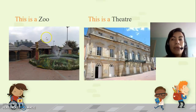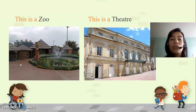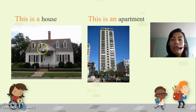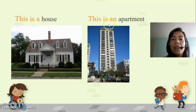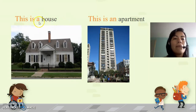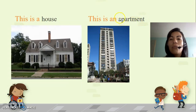This is a zoo, located in Mundo Aventuras Park — un mini zoológico dentro de la ciudad de Bogotá. And this is a theater — el Teatro Colón — which is located in downtown. This is a house and this is an apartment. Notice that we use A when the next word starts with a consonant, and we use AN when the next word starts with a vowel — like apartment, which starts with the vowel A.